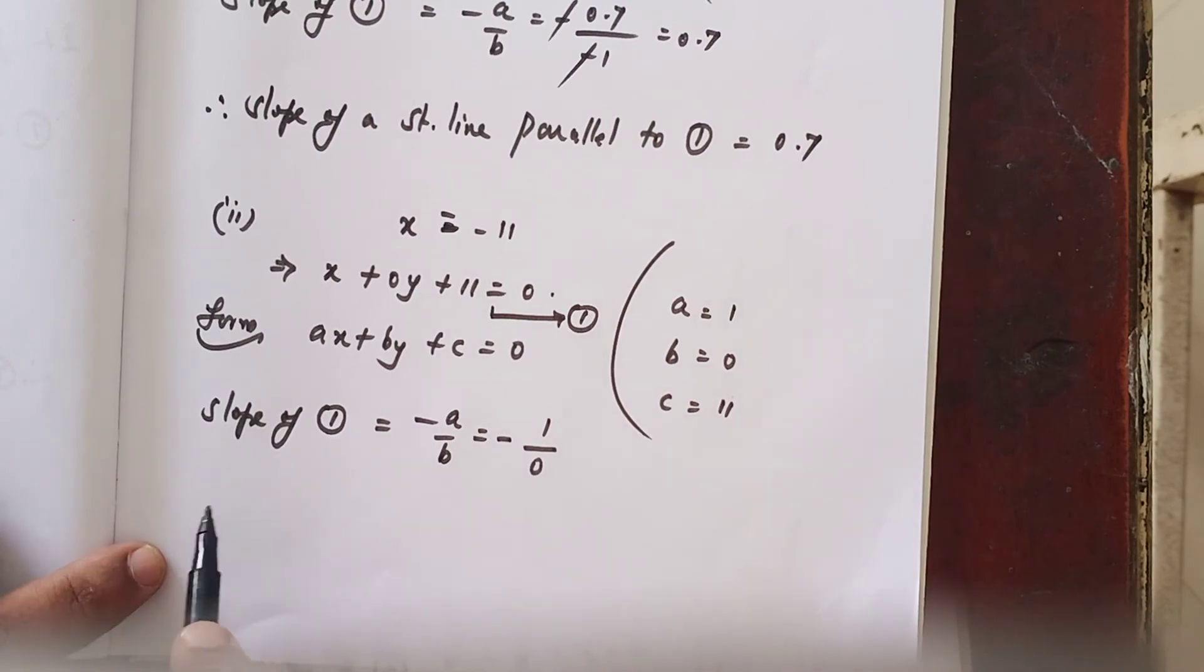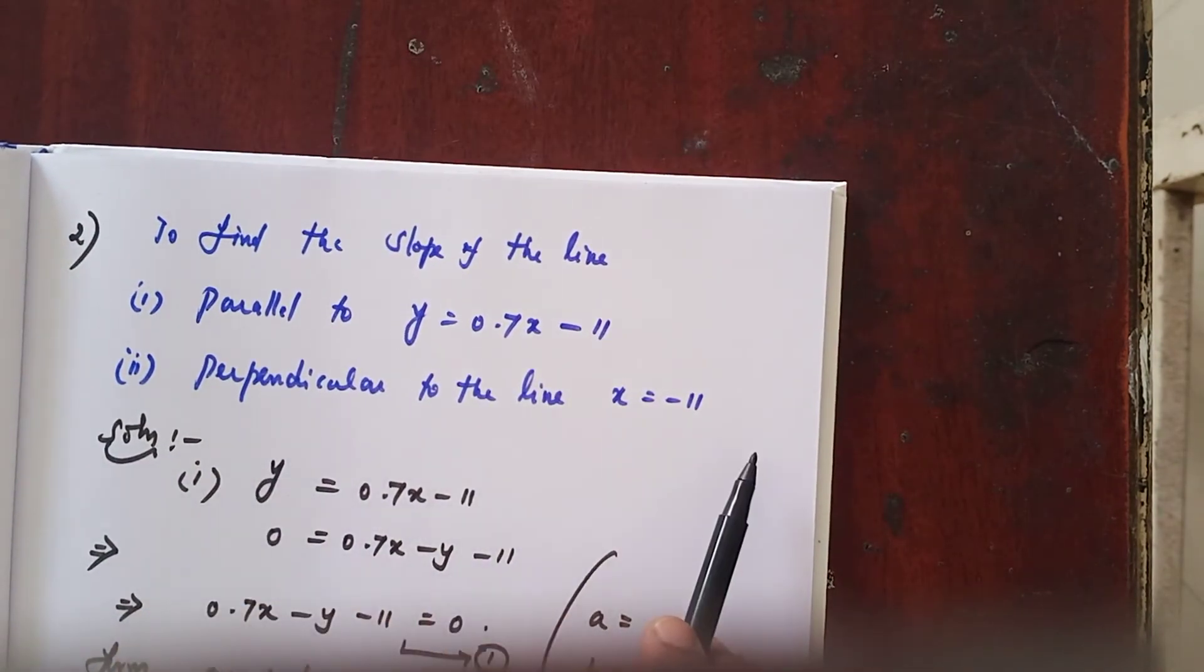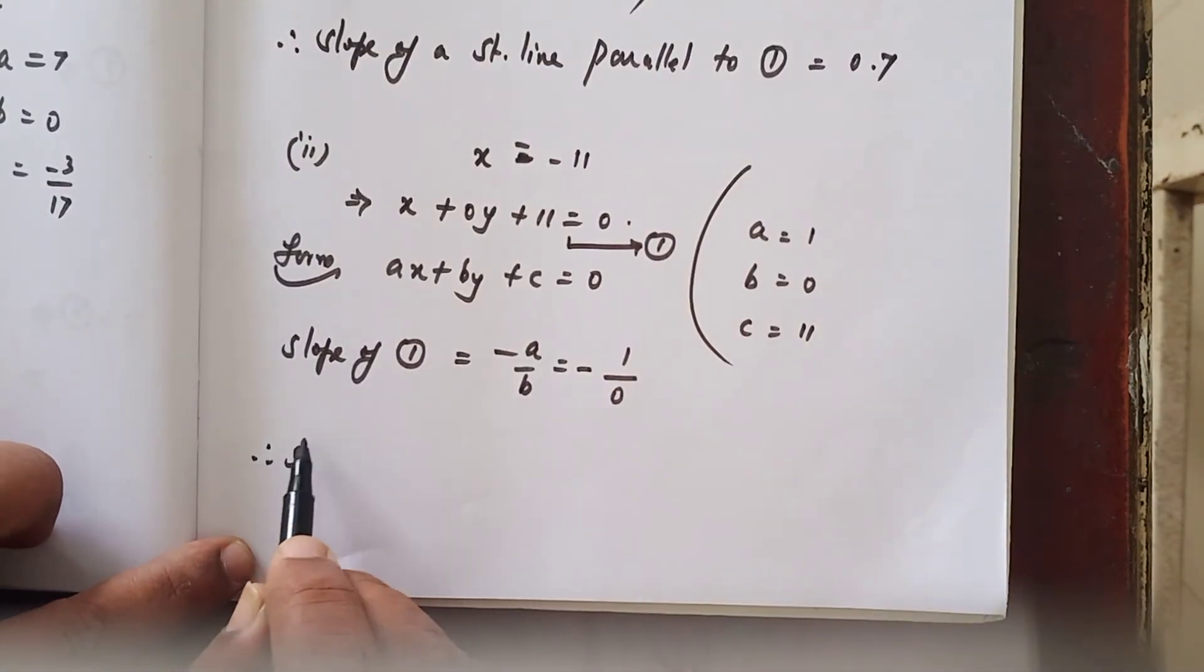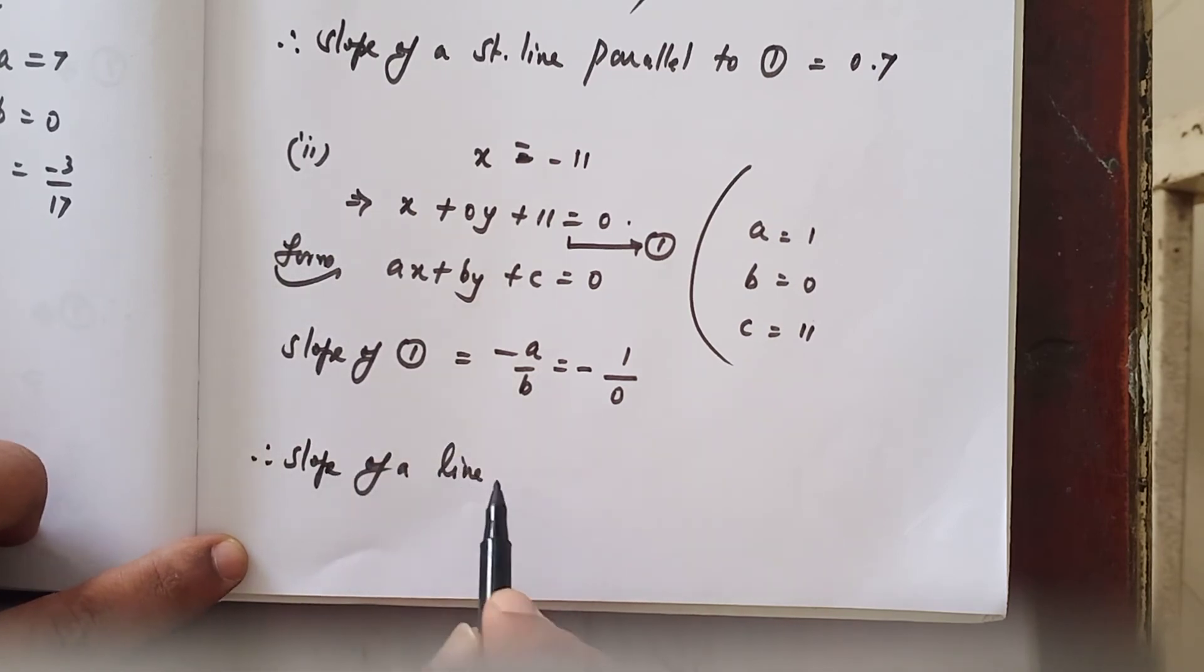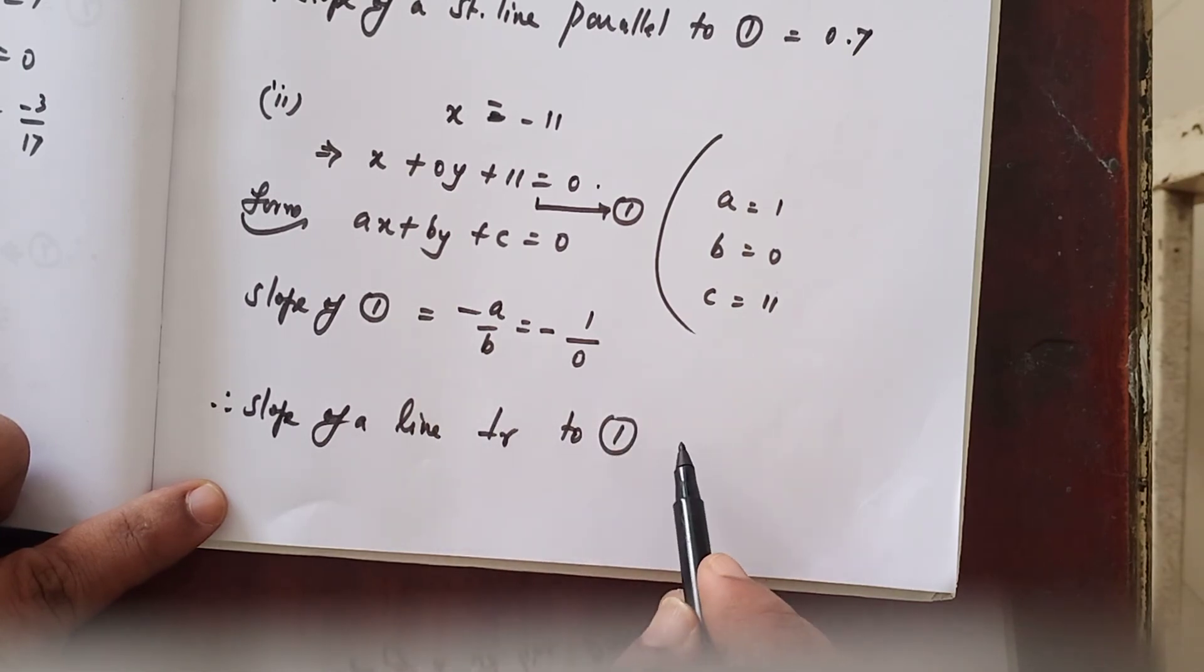Now, you are asked to find out slope of the line perpendicular to the given line. Therefore, slope of a straight line perpendicular to 1 is: